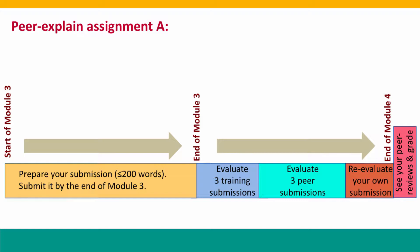First, you'll get a set of training submissions designed to make sure that everybody has sufficient expertise at the evaluation. Then you'll get three submissions from your peers to evaluate — you're welcome to do more than three if you'd like. Finally, you'll be asked to re-evaluate your own submission in the light of what you've learned. All of this evaluation work is to be done by the end of Module 4, and we'll give you a reminder with Module 4.